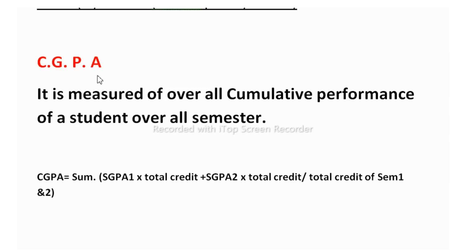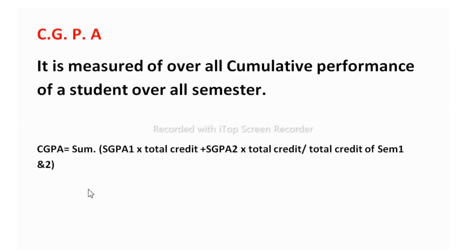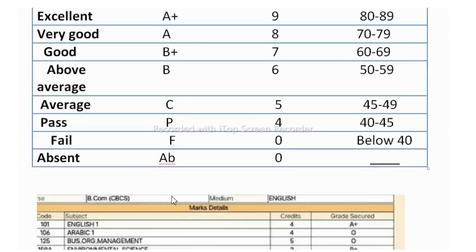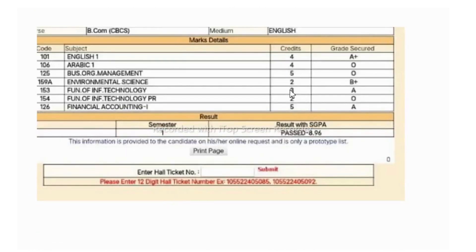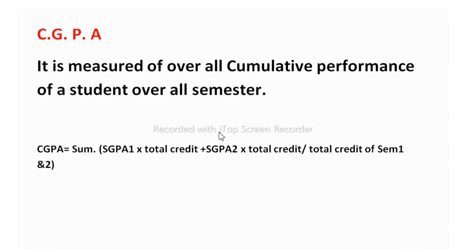Now let us see the CGPA. This is for second year semester. So here how we need to calculate this first and second year result. This is the formula of CGPA. First of all, we need to take SGPA of first semester into total credit, total credit whatever you got. Only credit we are talking about, this credits. Total credits whatever you got, you have to do the total.